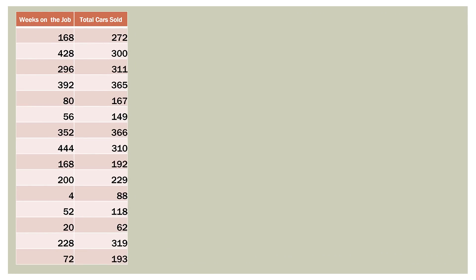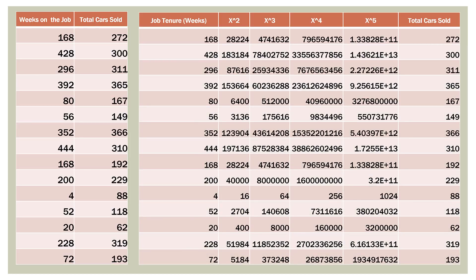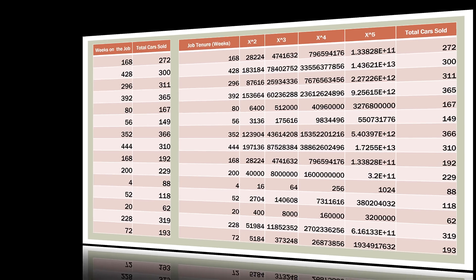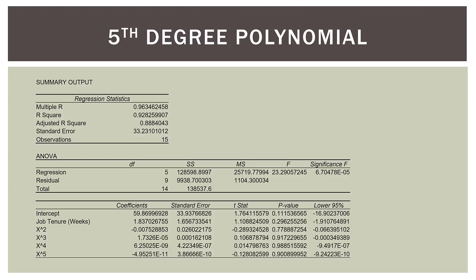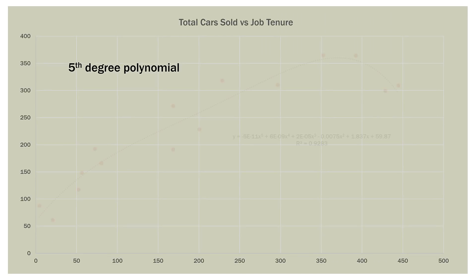Now we go even further — taking job tenure to the fifth power, giving us five variables in total. The fifth-degree polynomial still has a high R-squared of 0.9282, standard error of 33.23, and mean square error of 1,104. But now, nothing is statistically significant — not even the intercept. In the graph, the curve continues to bend, shape, and contort. It's twisting in certain places as it tries to follow the data points exactly. What we're seeing is the model trying to literally follow each individual point in our dataset.